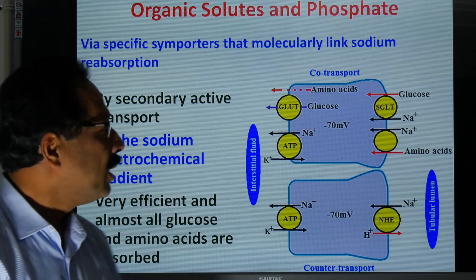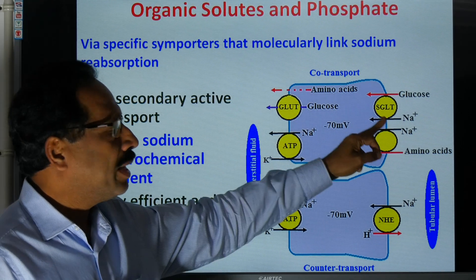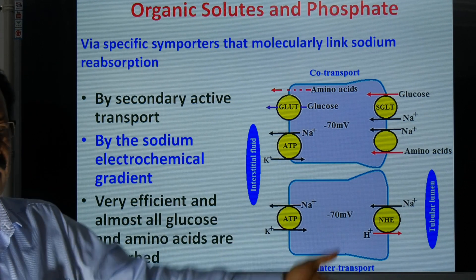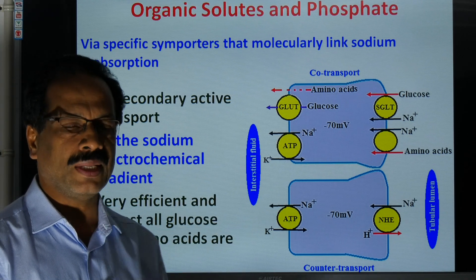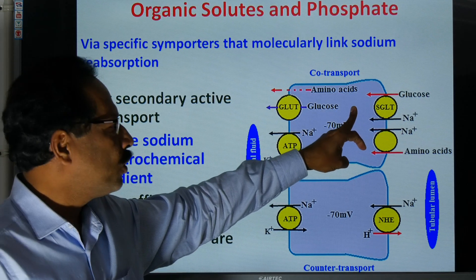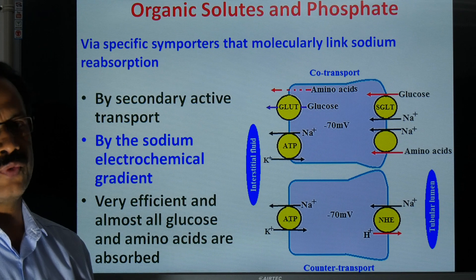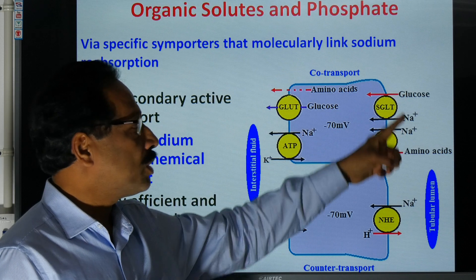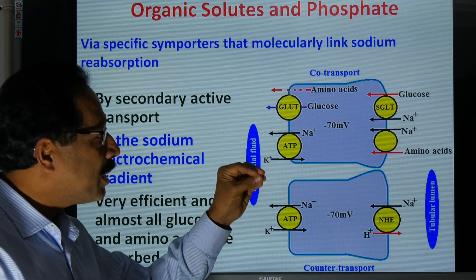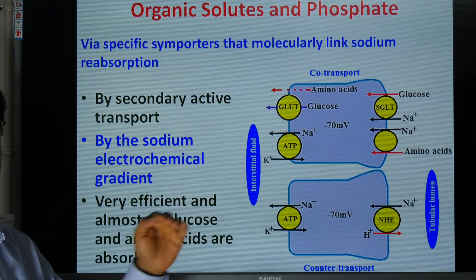In primary active transport — for example, sodium transport — Na⁺ moves out of the cell driven directly by energy from ATP, which is converted into ADP and energy. That is the direct use of energy. In secondary active transport, when sodium moves into the cell, glucose and amino acids move along with it via co-transport. For the transport of glucose or amino acids, there is no direct use of energy, but without sodium transport — which uses primary active transport energy — this co-transport cannot take place. Therefore glucose and amino acid transport involves indirect use of energy, called secondary active transport.